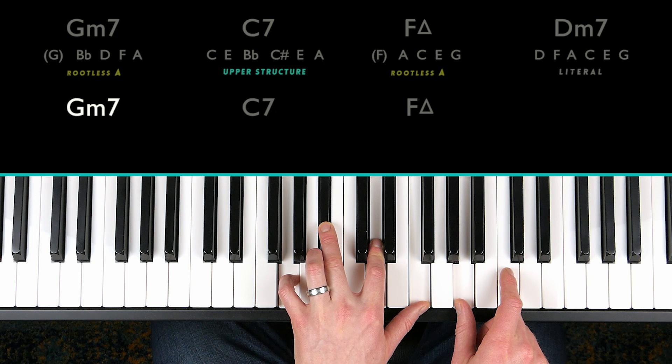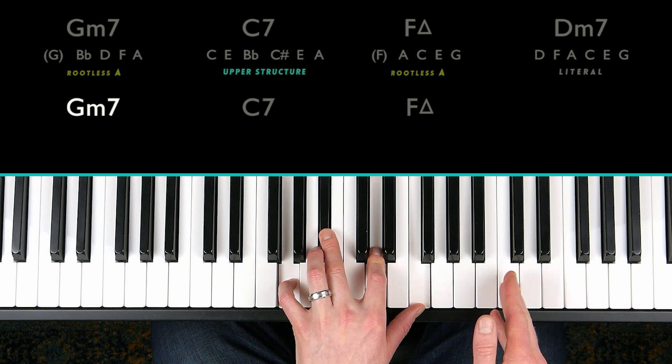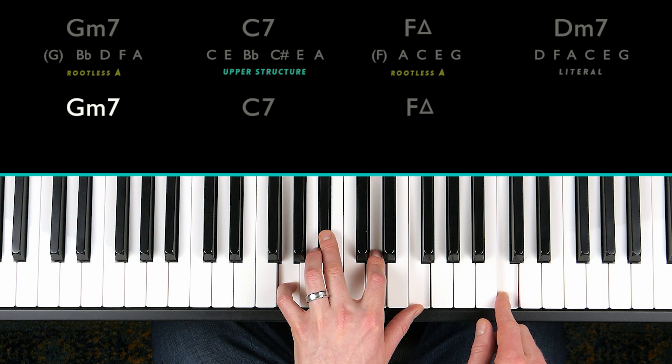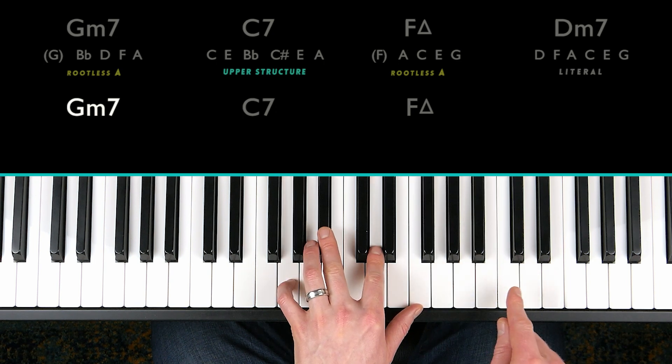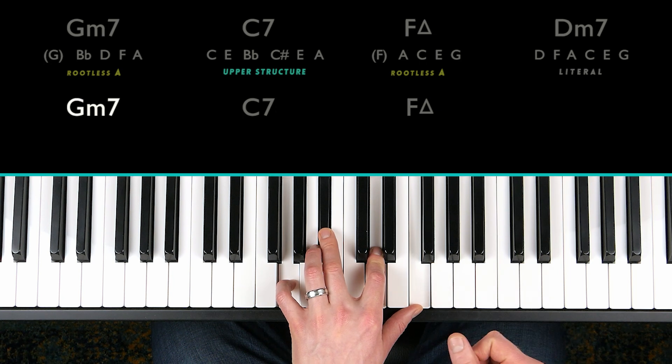Next we have a G minor seven. But this time the melody note is C, which scale degree is C from G. It is the fourth or the eleventh. So which chord voicing shall I use?